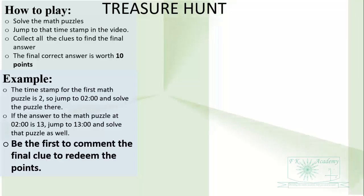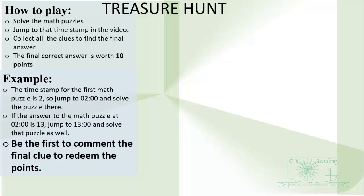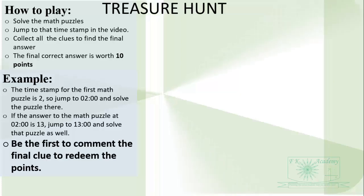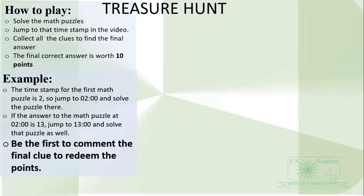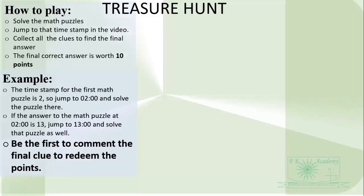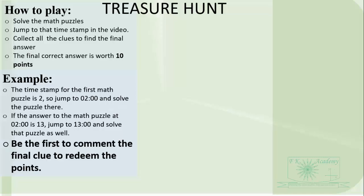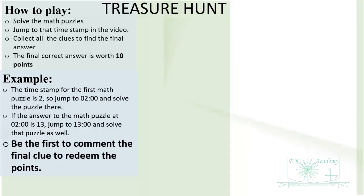Welcome to our treasure hunt game. How do you play this game? There are a series of math puzzles that you have to solve. When you get the answer, jump to that timestamp to find the next puzzle to solve. You are supposed to solve them in a certain order to get a final code correctly. For example, the timestamp for the first math puzzle is at 2, so click 02.00 to go to that math puzzle and solve it as quickly as possible. If the answer you got is 13, then write down 13.